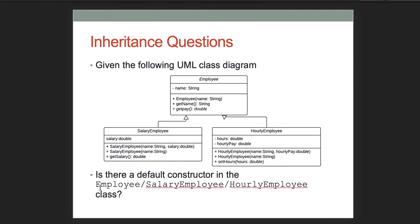Now some sample questions you might see on the exam. We have a UML class diagram with Employee, SalaryEmployee, and HourlyEmployee. The first question: is there a default constructor in the Employee, SalaryEmployee, or HourlyEmployee class? Looking through: Employee does not have a default constructor, SalaryEmployee does not, and HourlyEmployee does not. That means both SalaryEmployee and HourlyEmployee must call the explicit constructor of the parent Employee class.